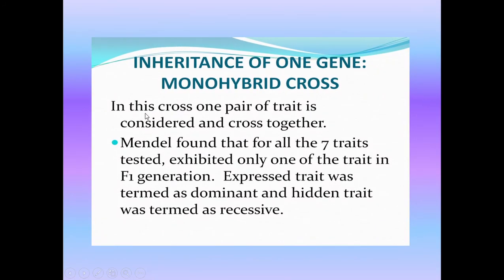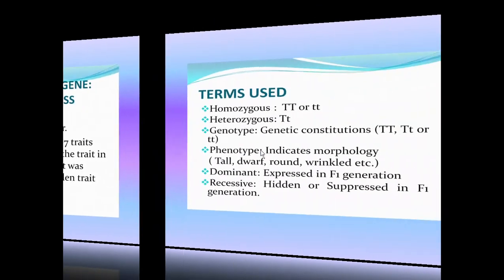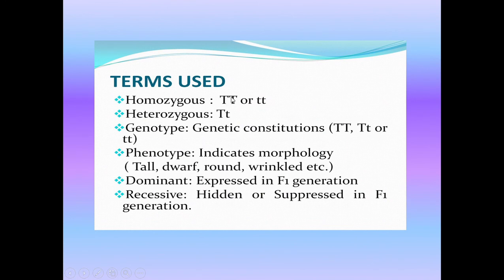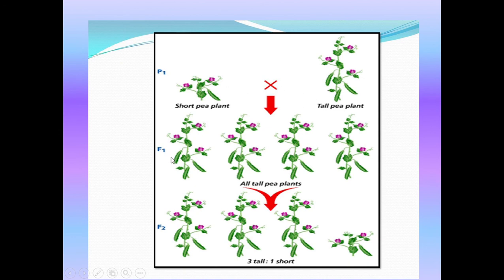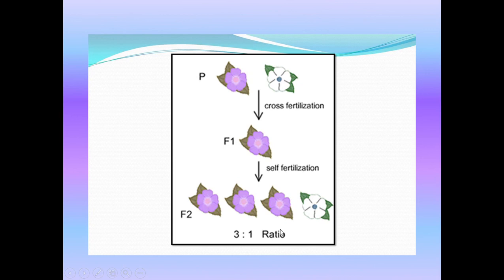He selected pea plants differing in one particular character — these experiments are called monohybrid crosses. Homozygous means TT or tt. A plant with capital T small t is also tall because the dominant allele is expressed — phenotypically tall but genotypically heterozygous. The dominant trait appears in the F1 generation and the recessive is hidden in F1 but expresses in F2. So when a short pea plant is crossed with a tall pea plant, all F1 are tall (Tt), and when these are selfed you get a 3 tall : 1 dwarf ratio. The same pattern occurs with violet and white flower color, and with round and wrinkled seeds.